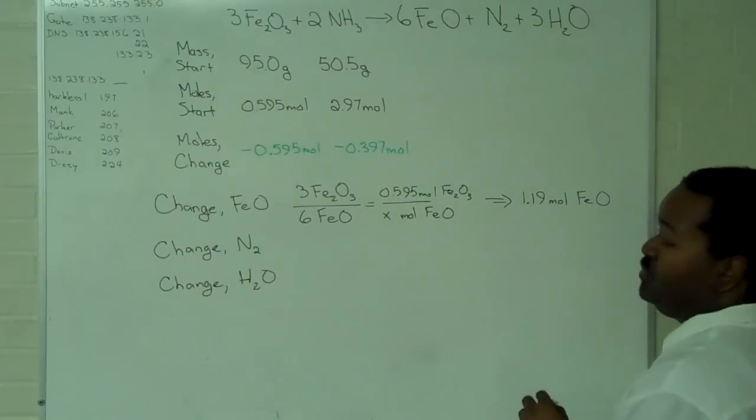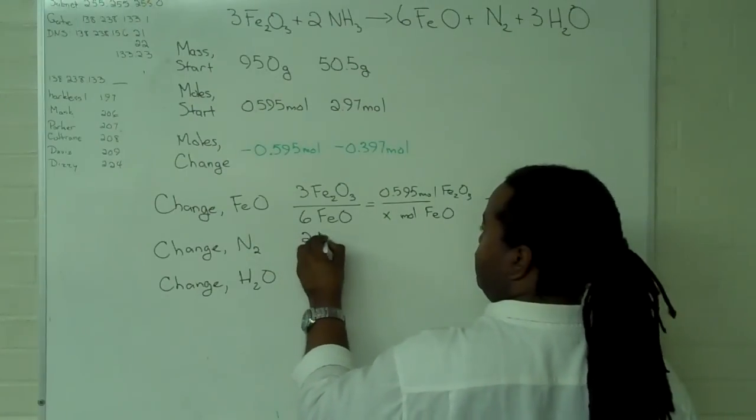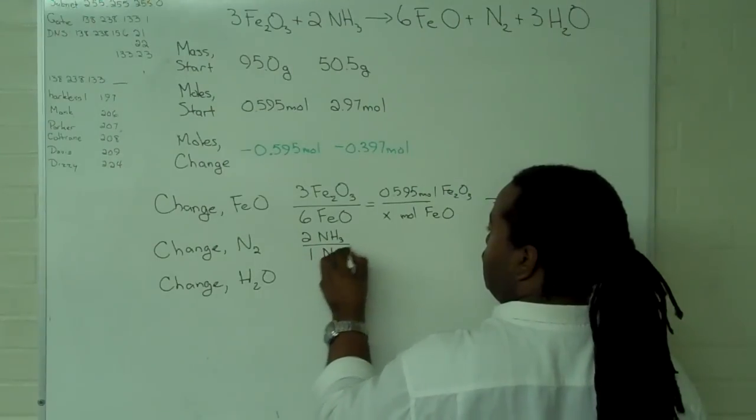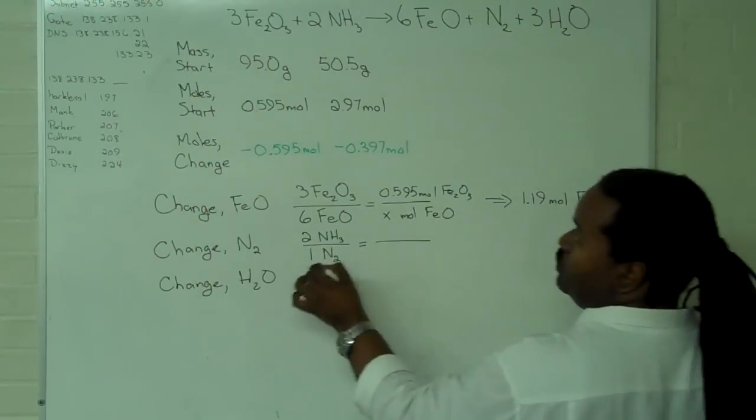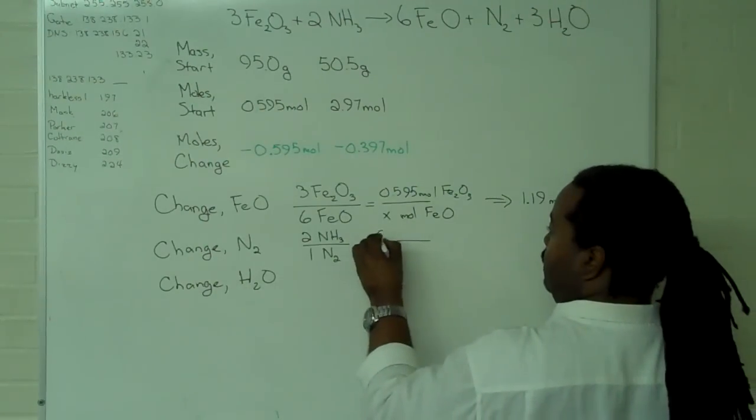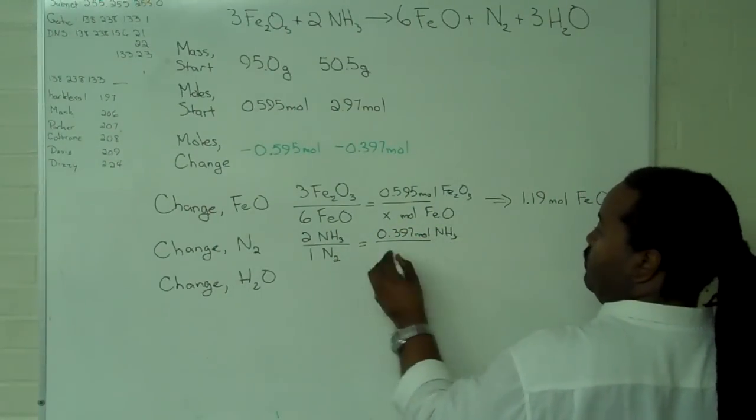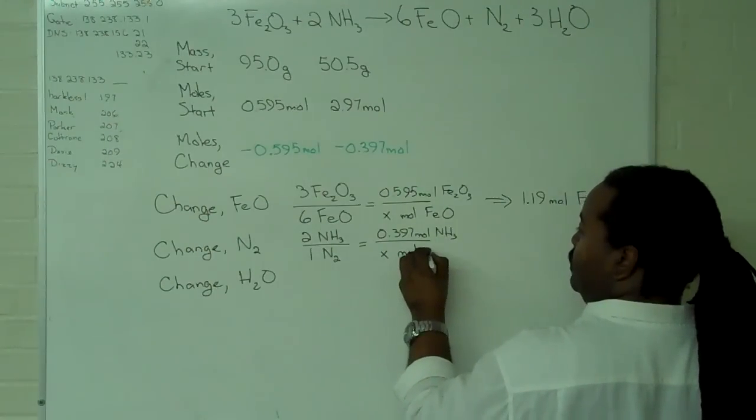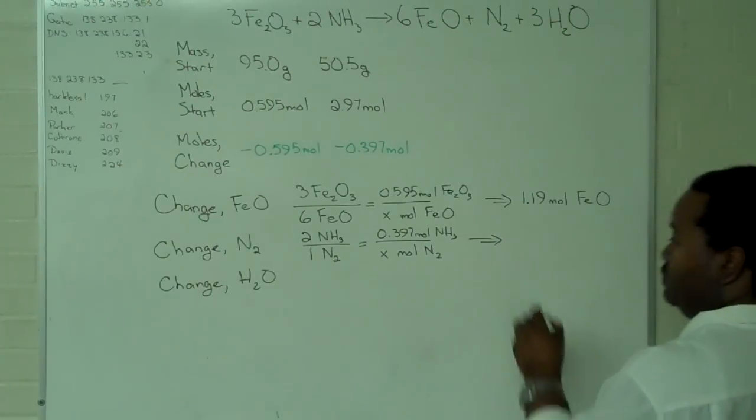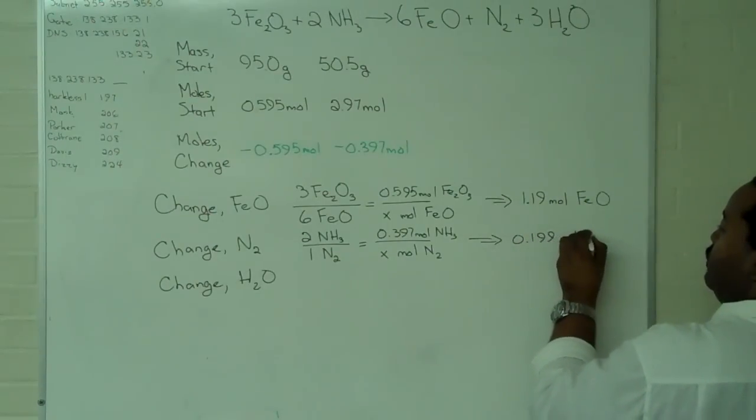For the nitrogen, I could use whatever ratio I want to. I'm going to use the comparison against ammonia. With that being 2 to 1, that makes it a lot easier for me to figure out what the value will be by estimation. But for clarity's sake, we will actually do the entire thing. This tells me that I will generate 0.199 moles of nitrogen.